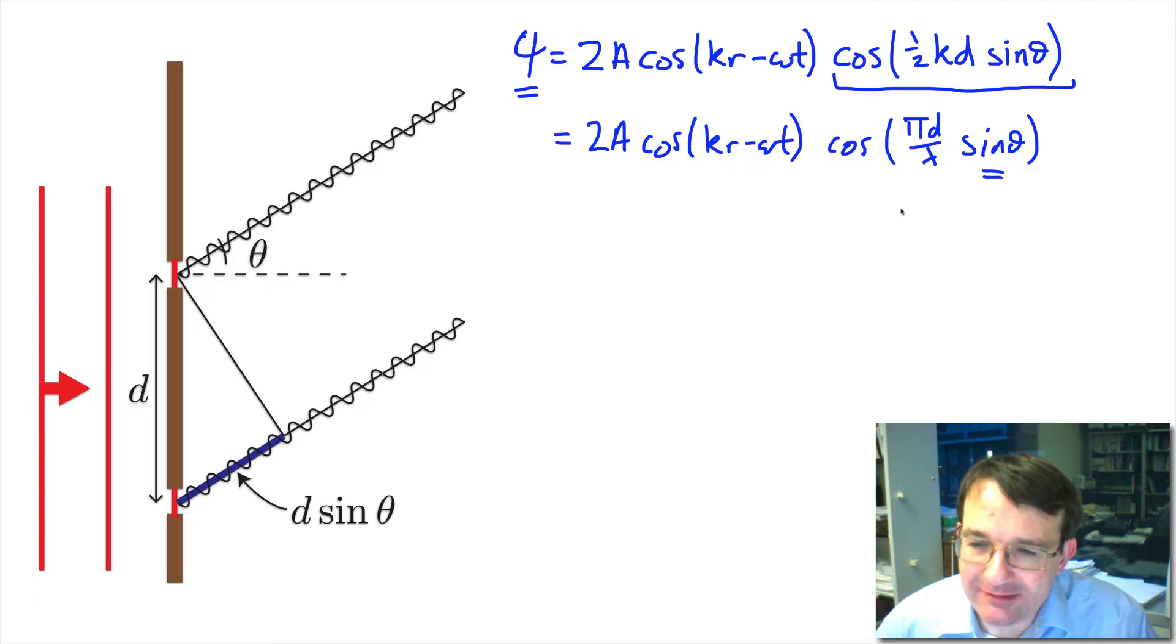I will get a maximum here when the cosine term is either plus or minus 1. This will give us a maximum at plus or minus 1 because what we see is the intensity which is proportional to the amplitude squared. So as long as this is plus or minus 1 I'll get a maximum.